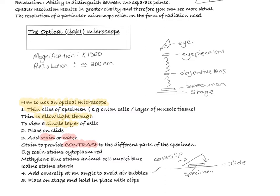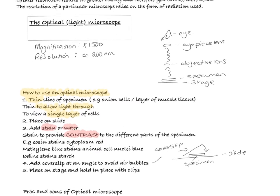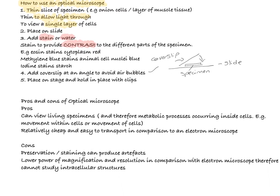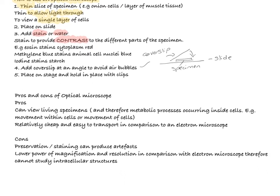Let's talk about the pros and cons of an optical microscope. With an optical microscope, you can view living specimens. And because of this, that means you can view metabolic processes occurring inside cells. For instance, you could see movement within a cell, or you could see the movement of cells themselves. And this is really important. In addition, optical microscopes are relatively cheap and easy to transport in comparison to an electron microscope.